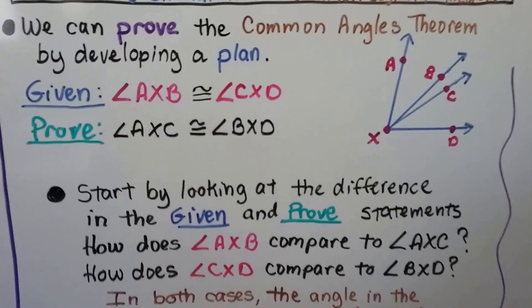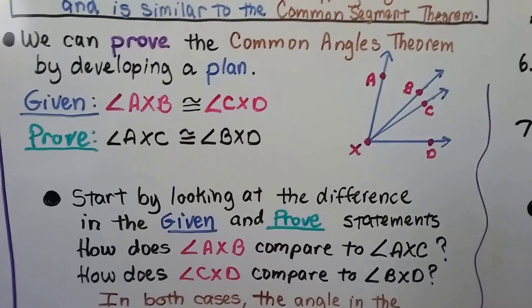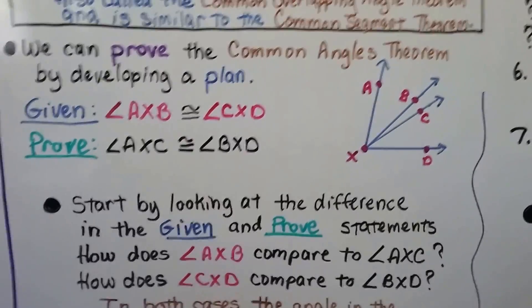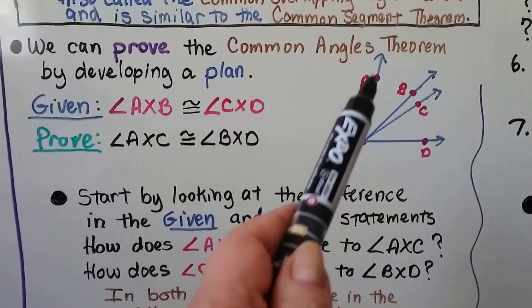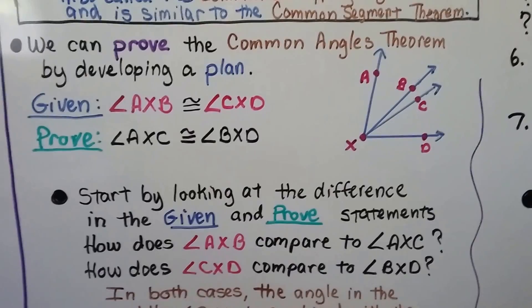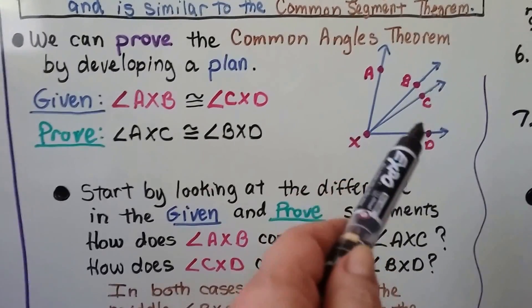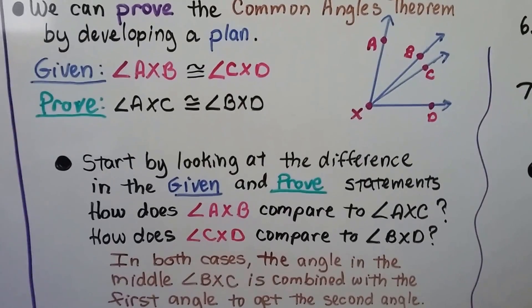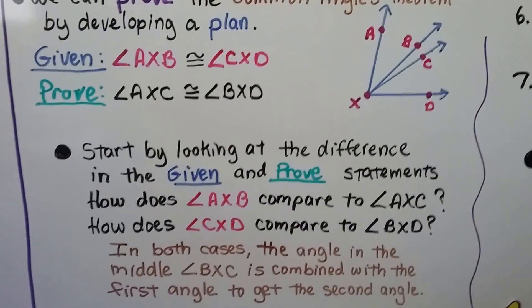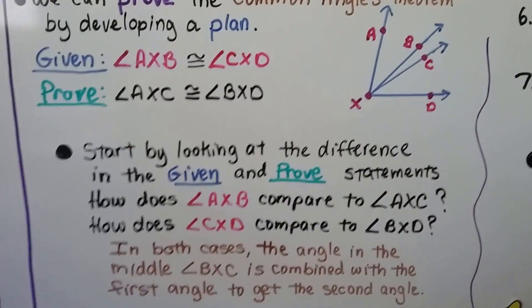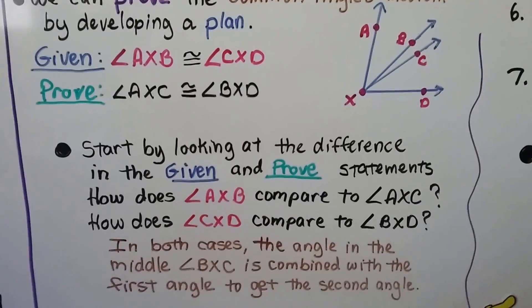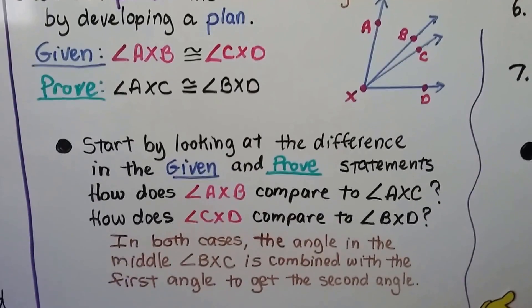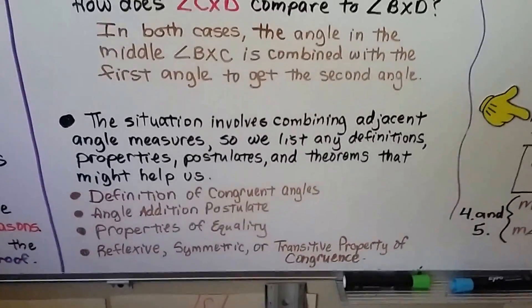We can prove the Common Angle Theorem by developing a plan. Here we have a given angle AXB is congruent to angle CXD. We need to prove that angle AXC is congruent to angle BXD. We start by looking at the difference in the given and the proved statements. How does angle AXB compare to angle AXC? How does angle CXD compare to angle BXD? In both cases, the angle in the middle, angle BXC, is combined with the first angle to get the second angle. The situation involves combining adjacent angle measures.